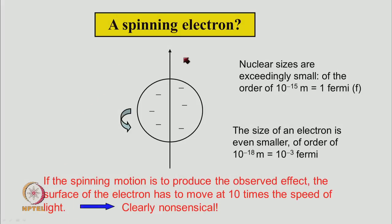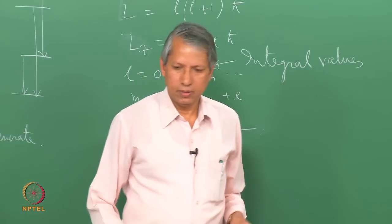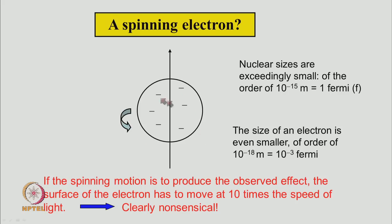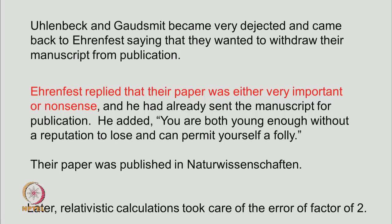What is the Lorentz complaint? Here it is. If the charge is rotating, it can produce magnetic field fine, but let us estimate what type of situation one needs to produce a situation which can explain this deflection. So, this is the spinning model of electron which is spinning in this fashion, the electron negative charges here. Nuclear sizes are exceedingly small of the order of 10 to the power minus 5 meter, what is called 1 Fermi. Electron size is even smaller, about 1000 times smaller than this. So, if the electrons rotation of this kind is actually producing the observed effect, the surface of the electron has to move at 10 times the speed of light. So, clearly this is nonsensical.